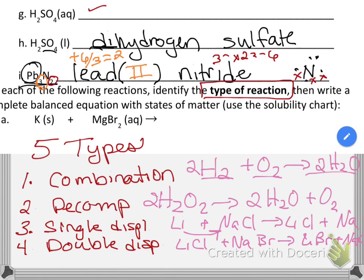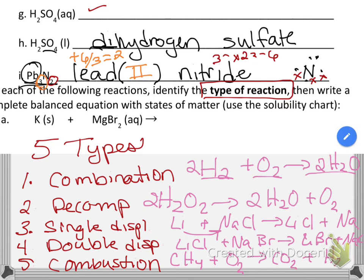Our final type of reaction is combustion — that's fire. It's lighting things on fire, which is where the phrase 'combustion engine' comes from. Combustion reactions are almost always some combination of carbon and hydrogen, they require oxygen, and they always produce CO₂ and water. So those are the five types of reactions we're studying.